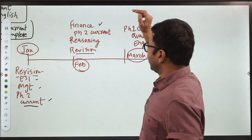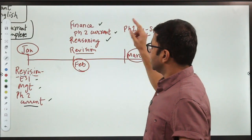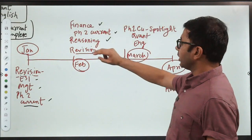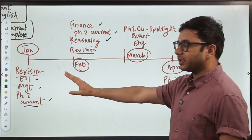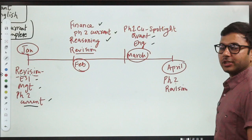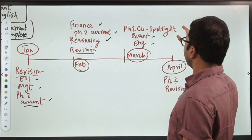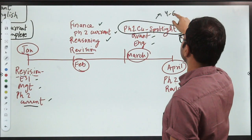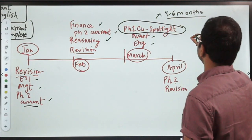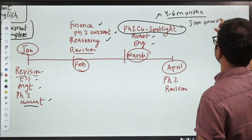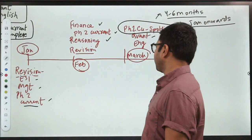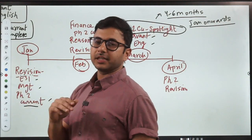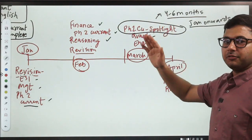In February, you are going to revise finance. Phase 2 current revision will continue. You will start with revision of reasoning through practice questions. In March, our ESI, management, and finance all three are done. Phase 2 current both months are done. Revision will be substantially covered. Reasoning is done here. So you pick up quant and English and revise it, probably in 10-15 days maximum. And here you start with phase 1 current affairs that is through spotlight. Spotlight 4 to 6 months is enough. So if the exam is to be held in May, then let's say January onwards you can cover. Jan, Feb, March, April and May - 5 months, more than enough. In March your objective is to cover Jan, Feb, March - 3 months spotlight.